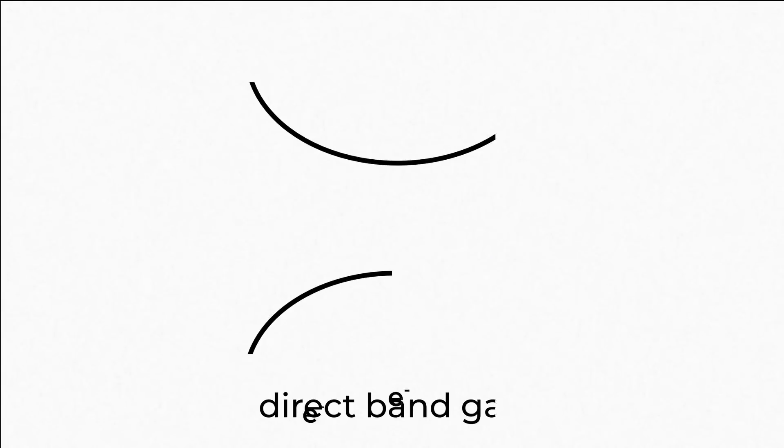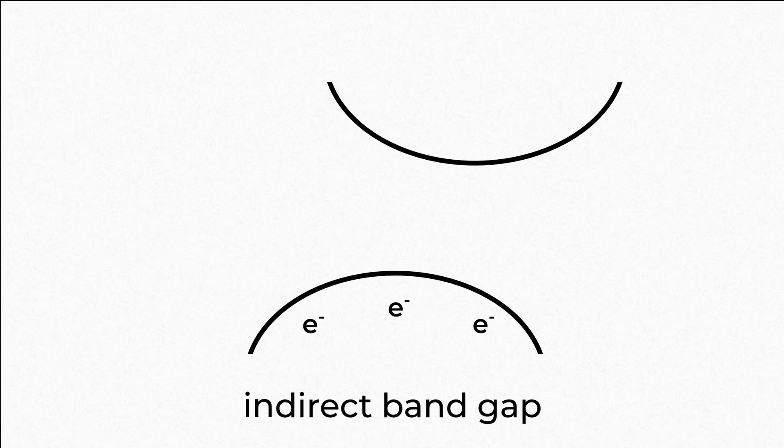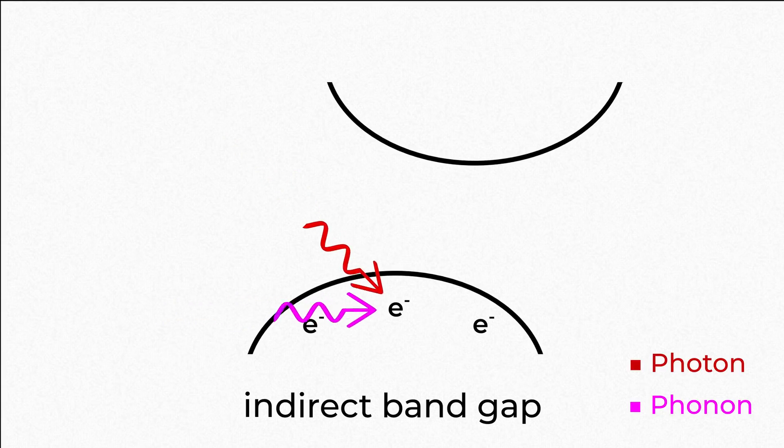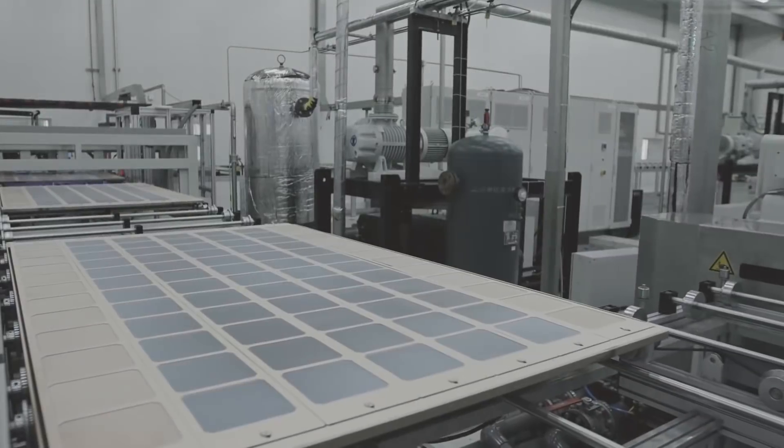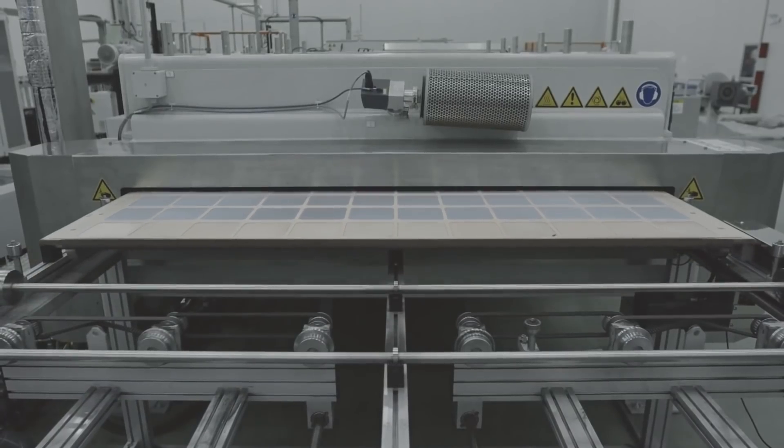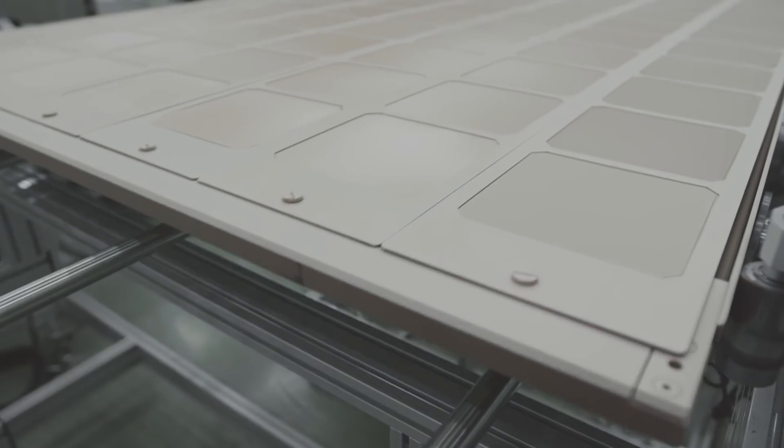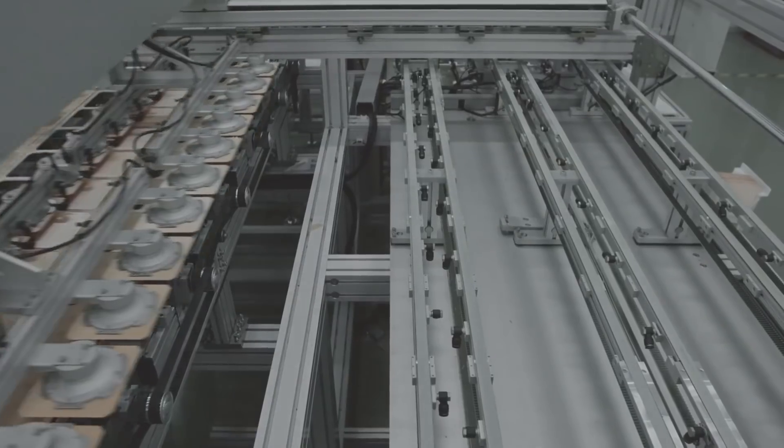Another key problem with silicon solar cells is that they are an indirect bandgap material, meaning that each time the material absorbs a photon, it also requires a very specific kick in vibrational energy called a phonon at the same time to absorb this photon. This is quite an unlikely event at the atomic level, so the silicon solar cells must be made very thick to increase the chances of absorption, which massively increases the overall cost.